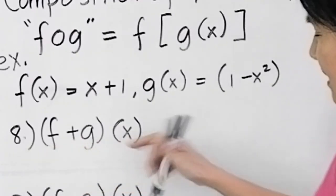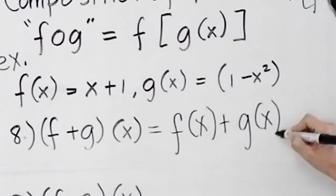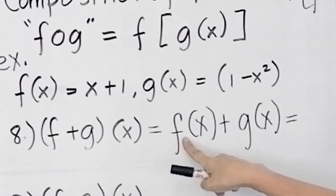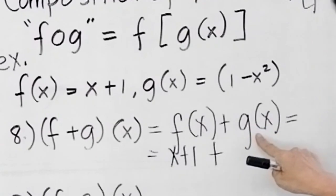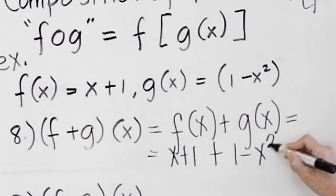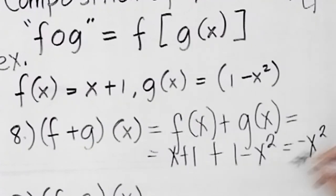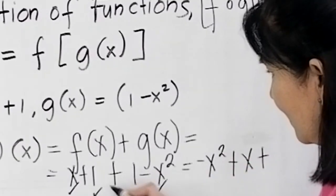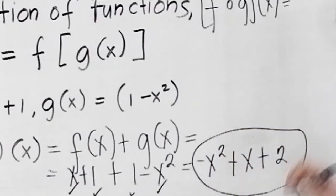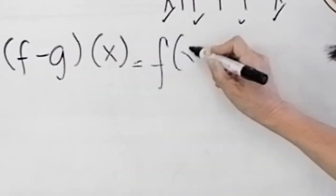What is (f+g)(x)? By definition, this is f(x) + g(x). f(x) is x + 1, and g(x) is 1 - x². Combining like terms: we have -x² plus x, and 1 plus 1 is 2. There are no more like terms, so the final answer is -x² + x + 2.